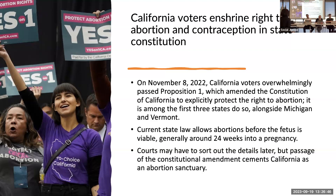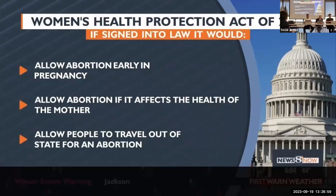California voters overwhelmingly passed Prop 1, which amended the state Constitution to explicitly protect the right to abortion. This is what needs to happen at the federal level, but it's stalled right now in the Senate due to the filibuster.